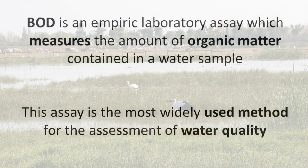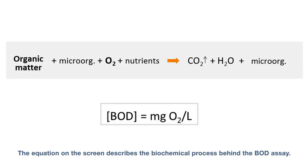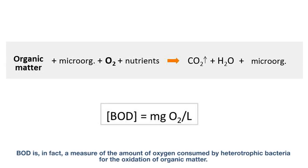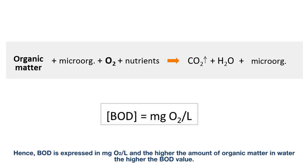The biochemical oxygen demand is an empiric laboratory assay which indirectly measures the amount of organic matter contained in a water sample. This assay is the most widely used method for the assessment of water quality. BOD is, in fact, a measure of the amount of oxygen consumed by heterotrophic bacteria for the oxidation of organic matter. Hence, BOD is expressed in milligrams of oxygen per liter, and the higher the amount of organic matter in water, the higher the BOD value.